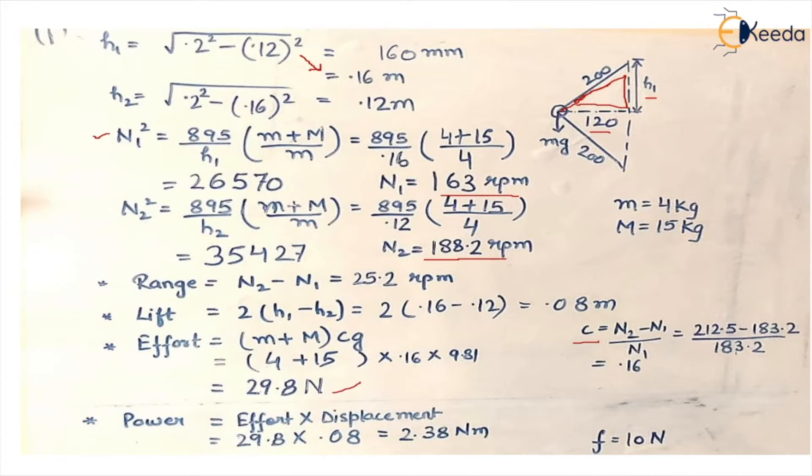Effort we have already calculated and displacement is the lift. How much is the change in the position of sleeve? So we put the value of displacement, replace the values and we'll get the answer which is 2.38 newton meter.